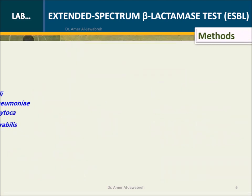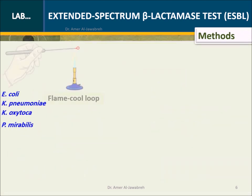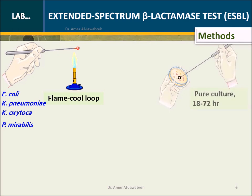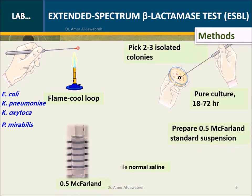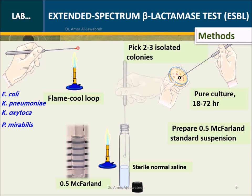ESBL test methods: from a pure culture, pick 2 to 3 isolated colonies and prepare a 0.5 McFarland standard suspension, diluted in normal saline.